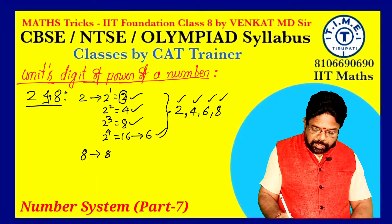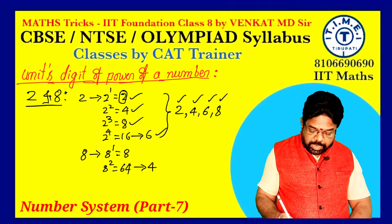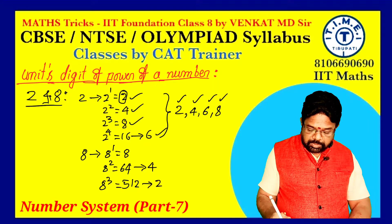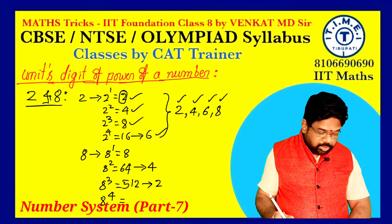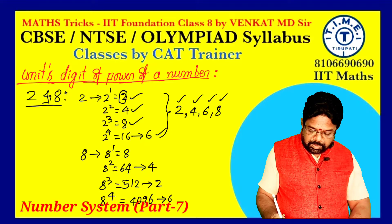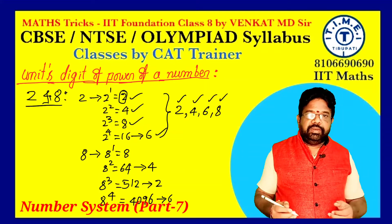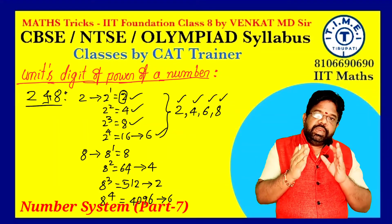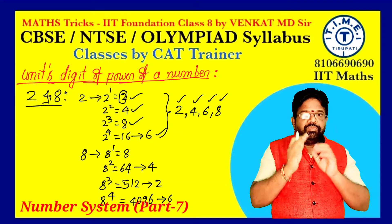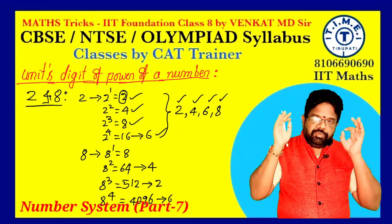Similarly for 8: 8^1 = 8 (unit digit 8), 8^2 = 64 (unit digit 4), 8^3 = 512 (unit digit 2), 8^4 = 4096 (unit digit 6), and 8^5 again gives unit digit 8 — it repeats. After every 4 powers, any digit's unit place value repeats.